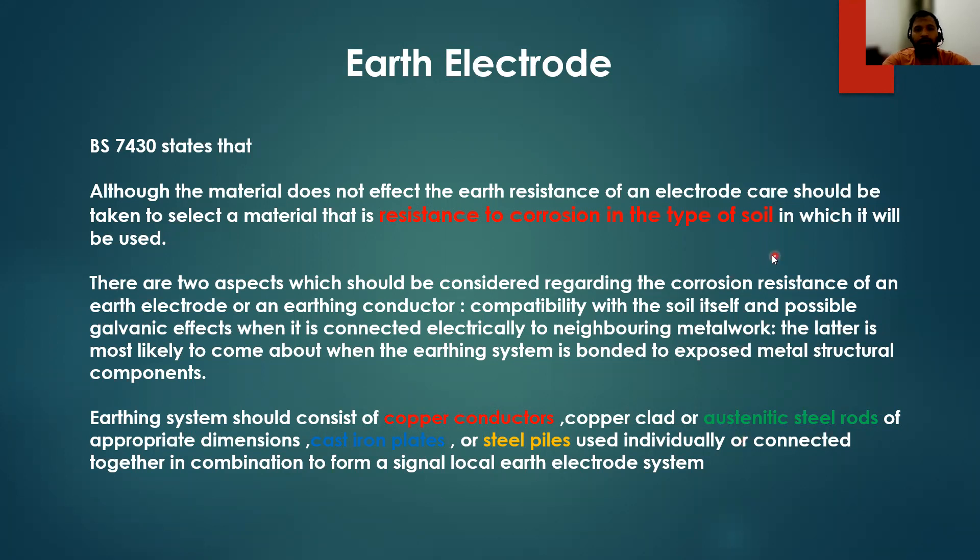The basic concept is it should have resistance to corrosion in the type of soil. The material, while you are choosing the earth rod, it should not be corroded. When earth rod is corroded, then there is no more protection because in the case of fault current, it should go through the ground area. But in this case, if your earth rod is corroded, there is no contact between your system and the earth. Basically, we have to be very careful while selecting the earth rods.